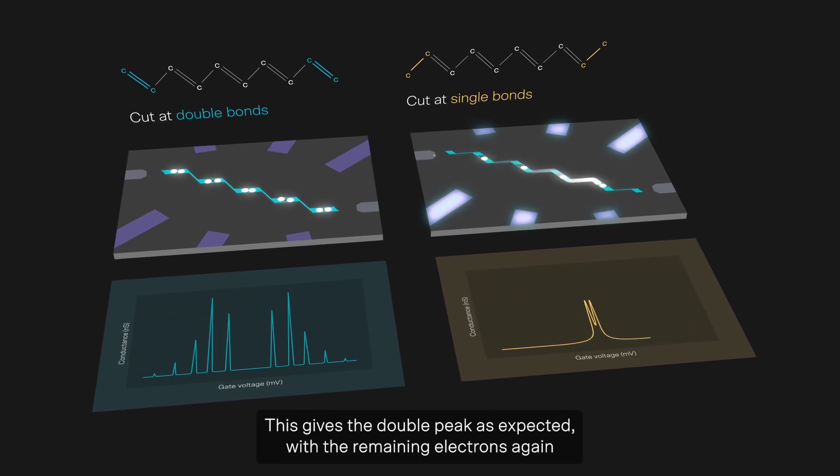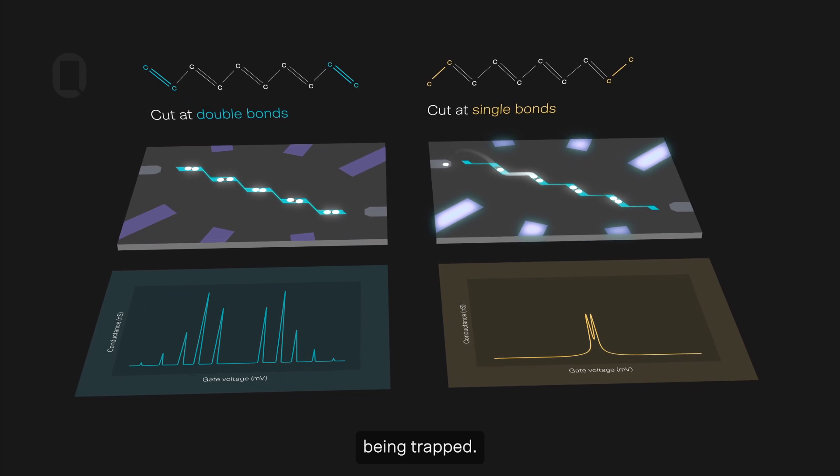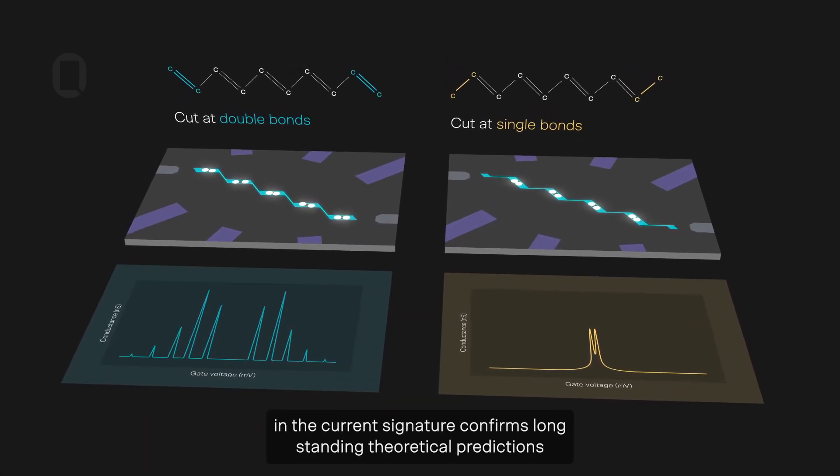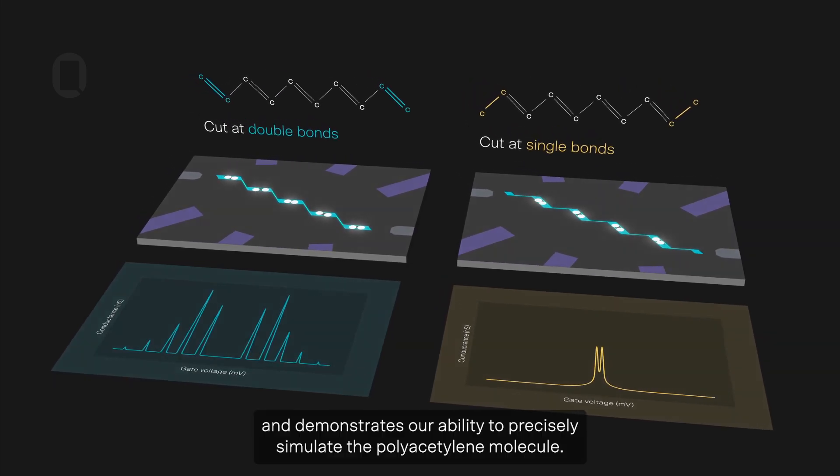This gives a double peak as expected, with the remaining electrons again being trapped. This dramatic change in the current signature confirms long-standing theoretical predictions, and demonstrates our ability to precisely simulate the polyacetylene molecule.